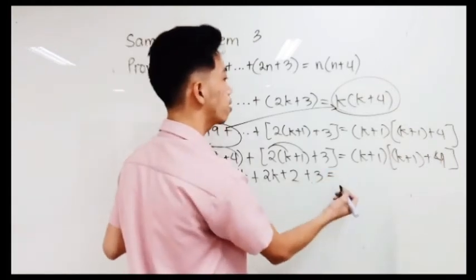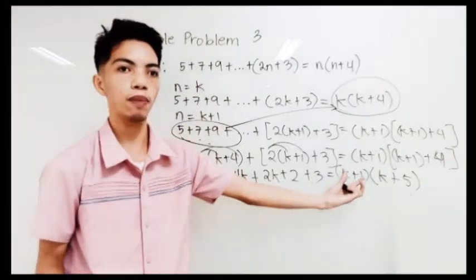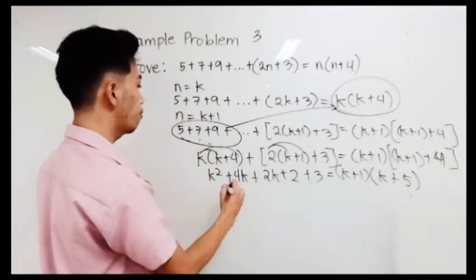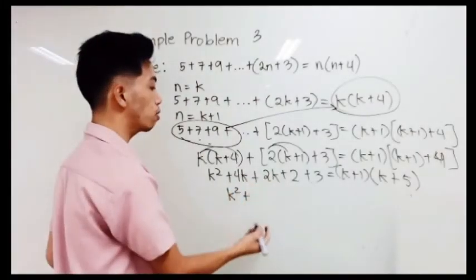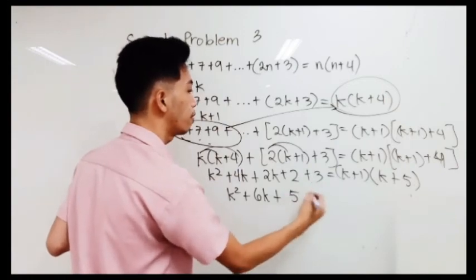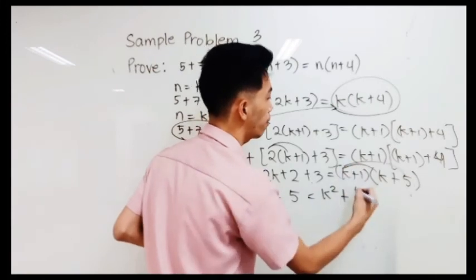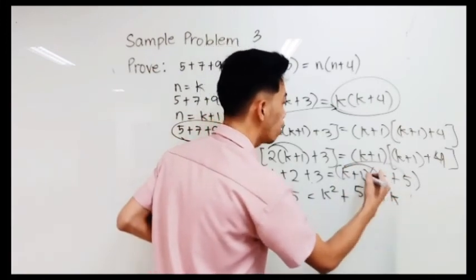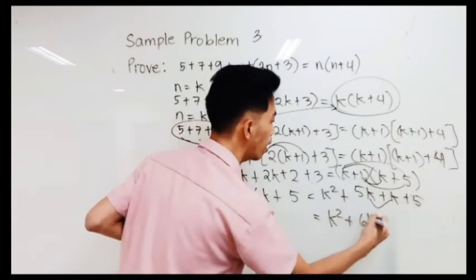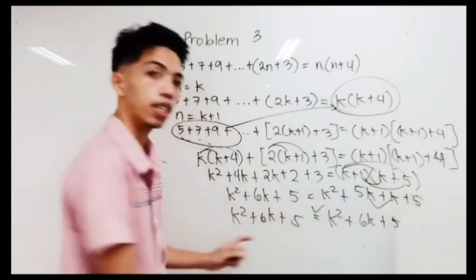So we have k times k plus 4 plus 2 times k plus 1 plus 3, equals k plus 1 multiplied by k plus 1 plus 4, which simplifies to k plus 1 times k plus 5. On the left side: k squared plus 4k plus 2k plus 5 gives k squared plus 6k plus 5. On the right, using FOIL on k plus 1 times k plus 5: k squared plus 5k plus k plus 5, combining to k squared plus 6k plus 5. Both sides are equal, therefore this statement is true for any value of n.